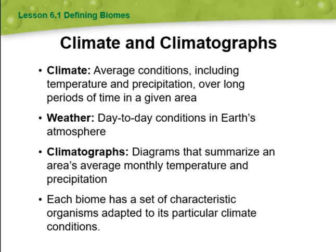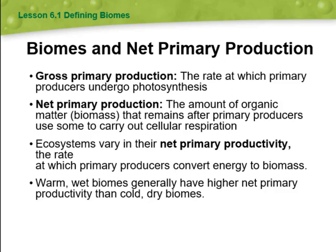Each biome has a set of characteristics with organisms adapted to its particular climate conditions. Regarding biomes and net primary production: gross primary production is the rate at which primary producers undergo photosynthesis, while net primary production is the amount of organic matter — biomass — that remains after primary producers use some to carry out cellular respiration. Ecosystems vary in their net primary productivity, and warm, wet biomes generally have higher net primary productivity than cold, dry biomes.